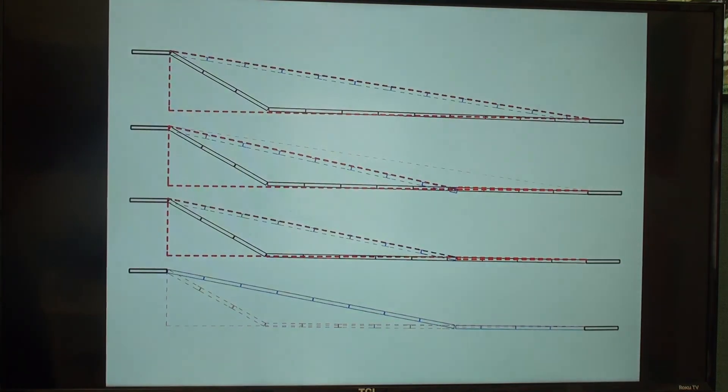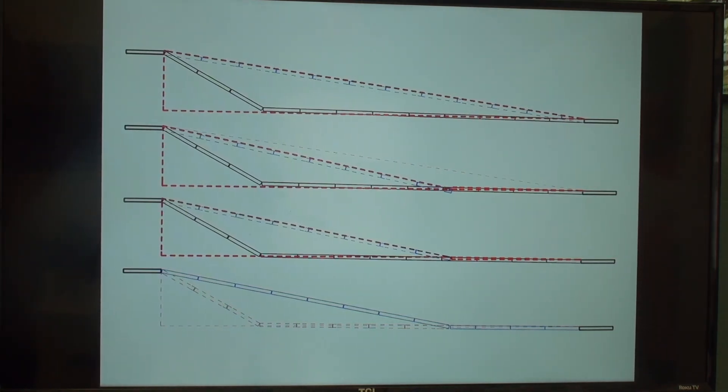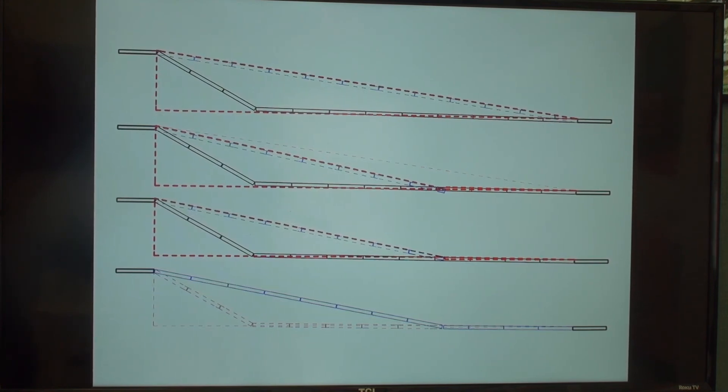In summary, we can create an ADA-compliant sloped sidewalk by only demoing the first eight panels and replacing them with new panels at 4.9% slope.